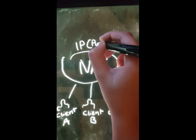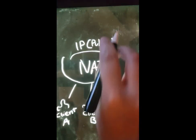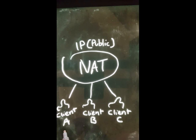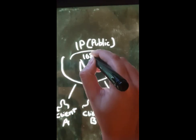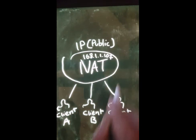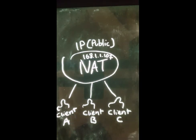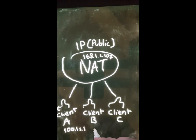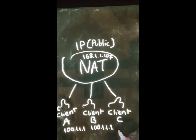NAT is used in routers to translate IP addresses among the devices. The NAT receives a public IP address and every device within the NAT will receive their own private IP address. NAT is also used as a barrier within the system to avoid unwanted traffic.